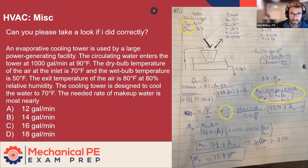Can you please take a look if I did correctly? This one's about a cooling tower. An evaporative cooling tower is used by a large power generating facility. The circulating water enters the tower at 1000 GPM at 90 degrees. The dry bulb temperature of the air at the inlet is 70 degrees and the wet bulb temperature is 50. The exit temperature of the air is 80 at 80% RH. The cooling tower is designed to cool the water to 70. The needed rate of makeup water is most nearly what?